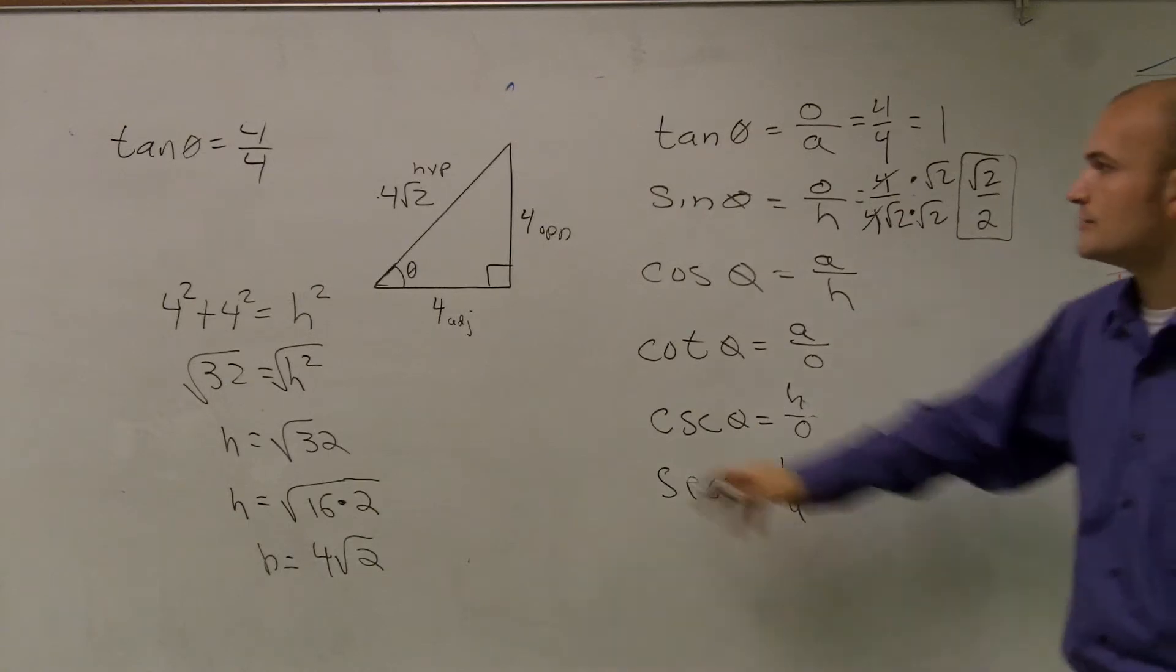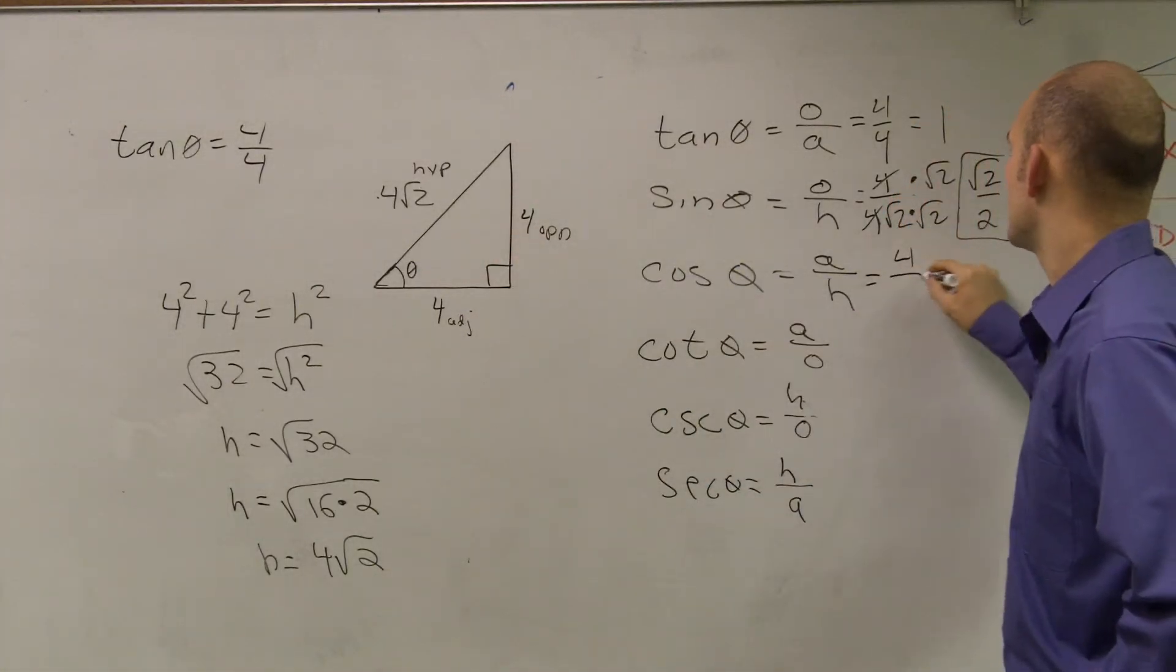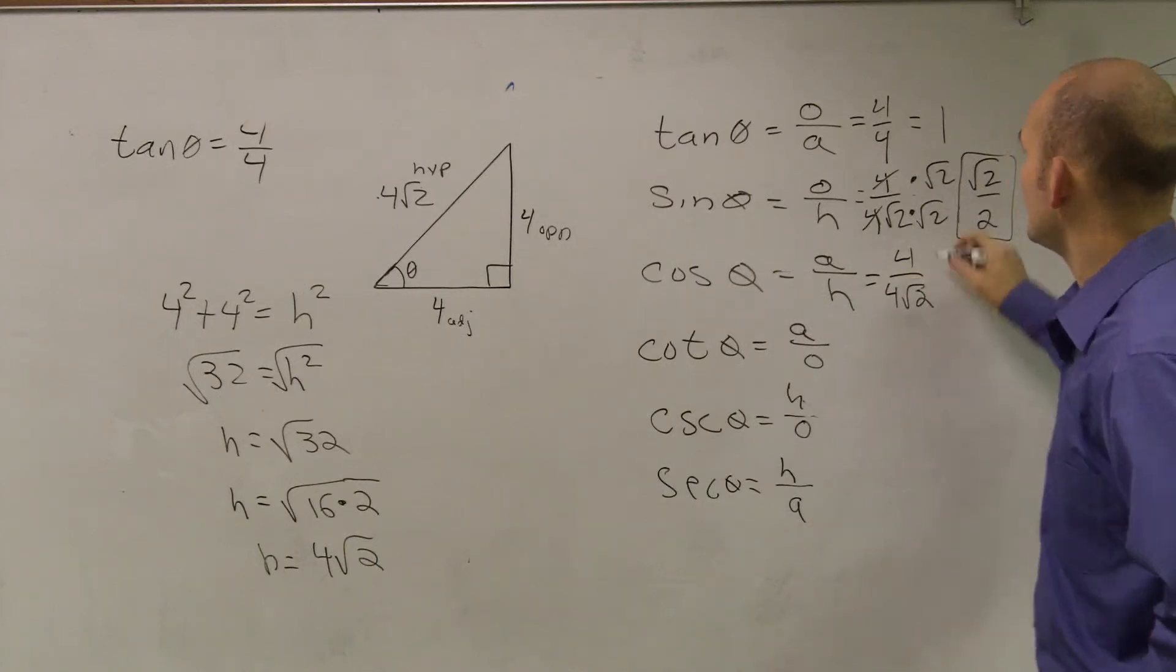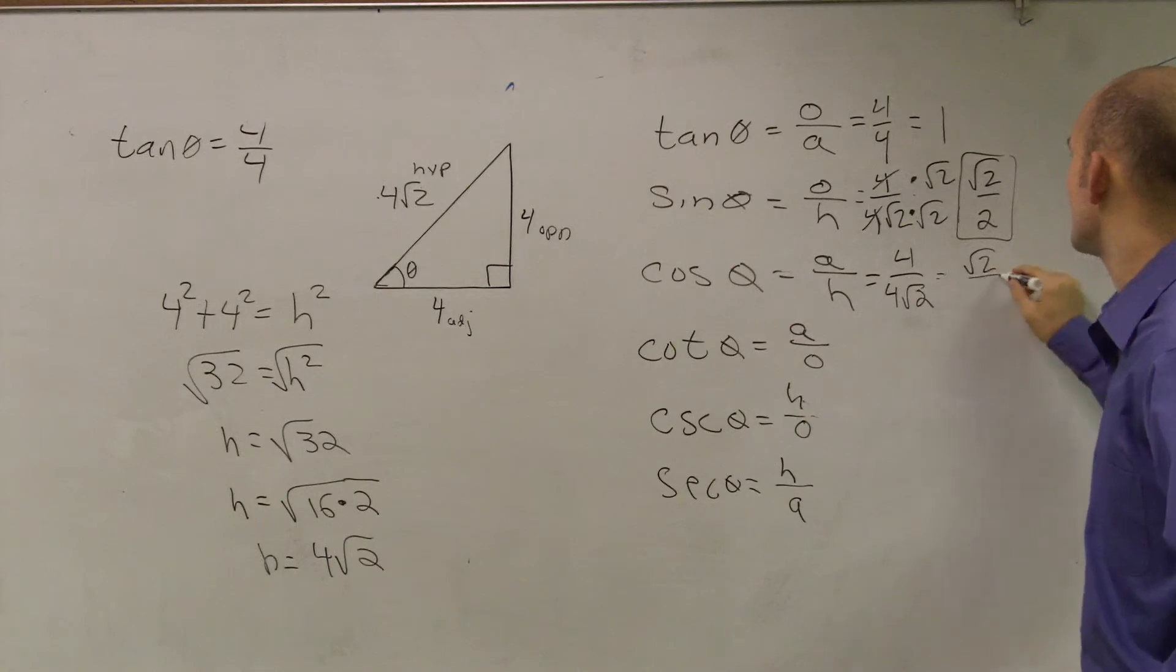Cosine is adjacent over hypotenuse, 4 over 4 radical 2. And we notice that that's the exact same thing as sine, so we're going to get the same answer. So I'll just kind of shortcut that.